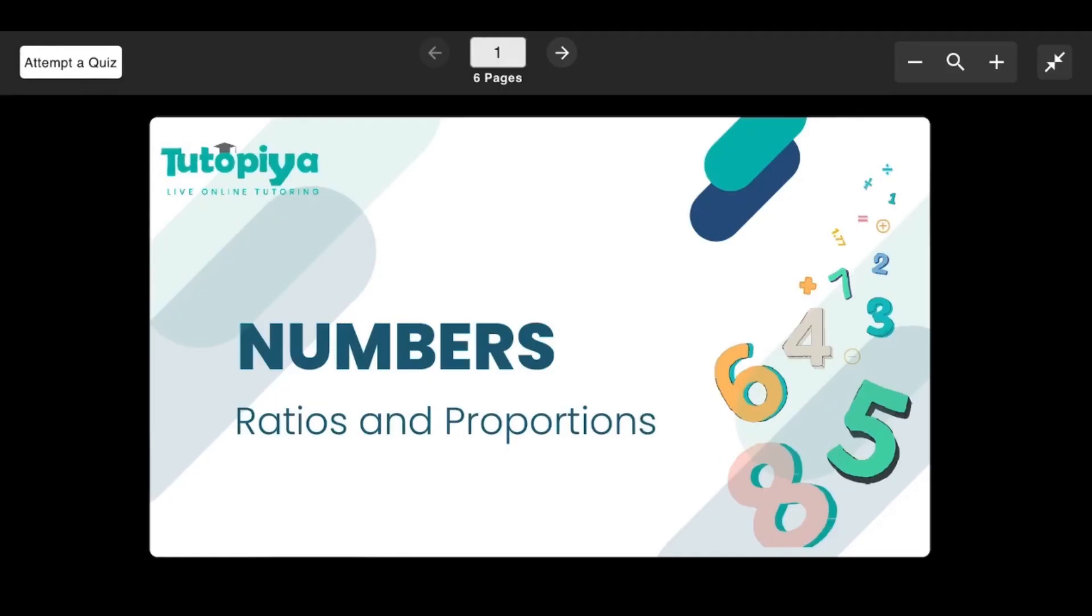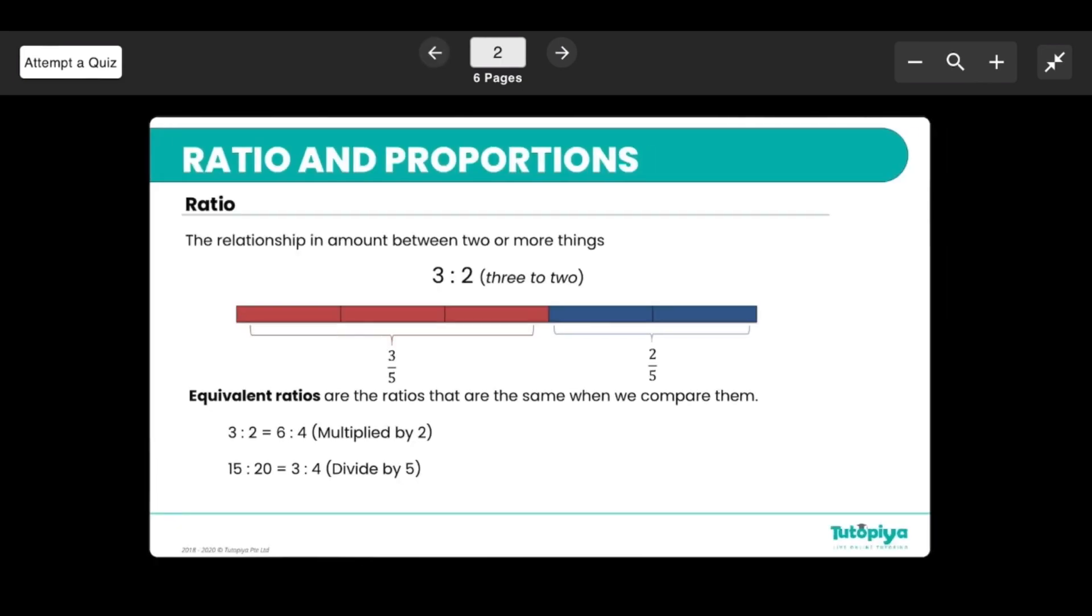Hello everyone, today we're focusing on Cambridge IGCSE mathematics, topic of number, subtopic ratios and proportions. Under ratio, we basically look at the relationship in amounts between two or more things. For example, 3:2 means one particular person has three-fifths of the amount while the other person has two-fifths of the amount. We also can use equivalent ratios.